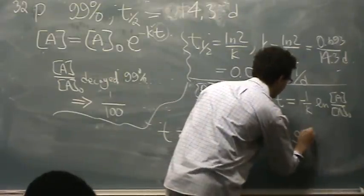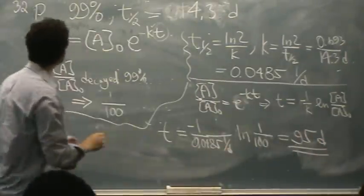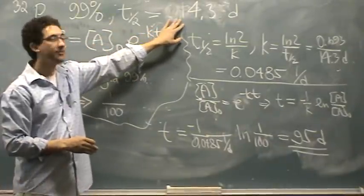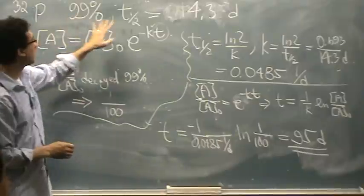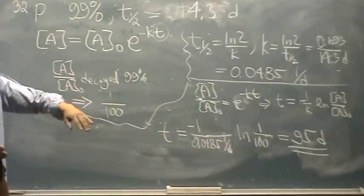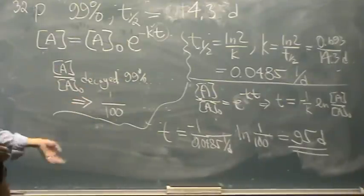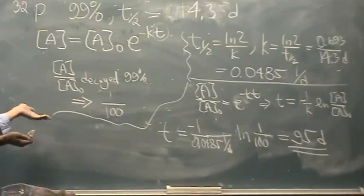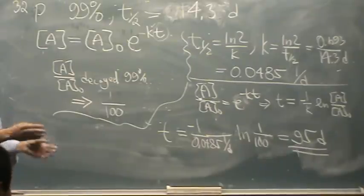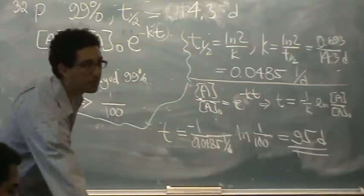So that's in units of days. So it'll take 95 days with this half-life. So you can imagine, after 14.3 days, half of it's gone. Another 14.3 days, another half is gone, et cetera. Well, how long would it take to get that far? 95 to get down to 99% gone. Is that okay? Very simple sort of problem.